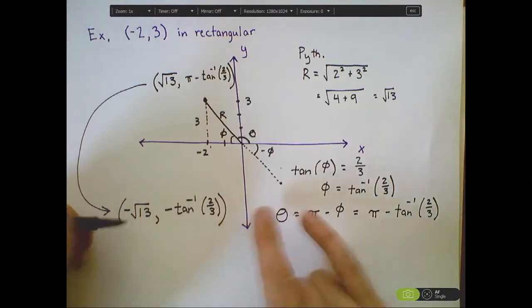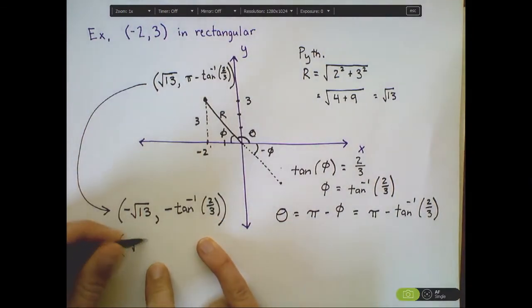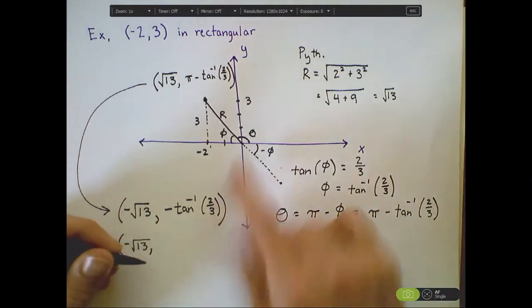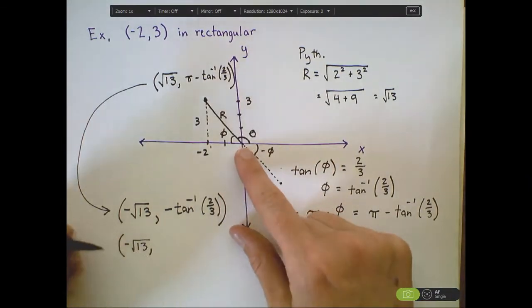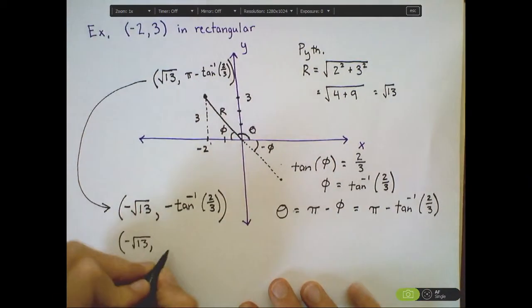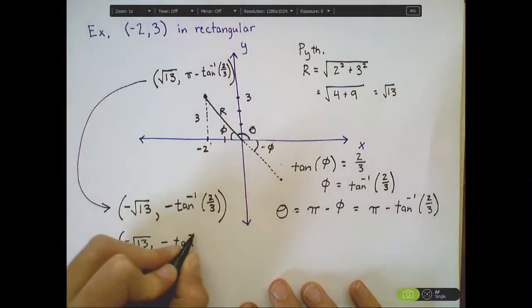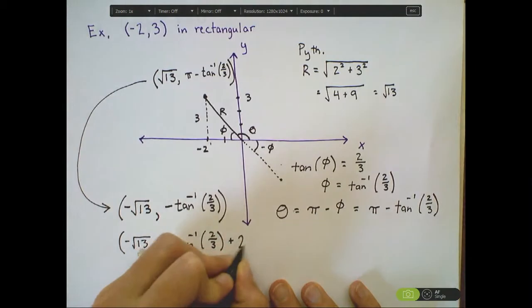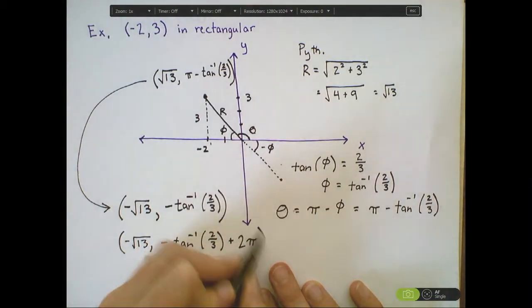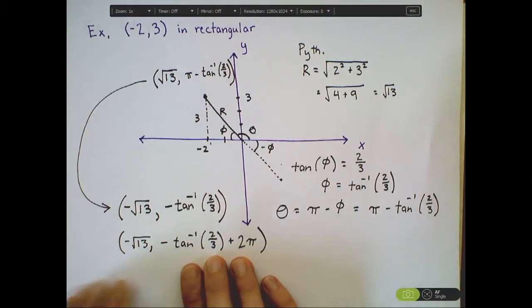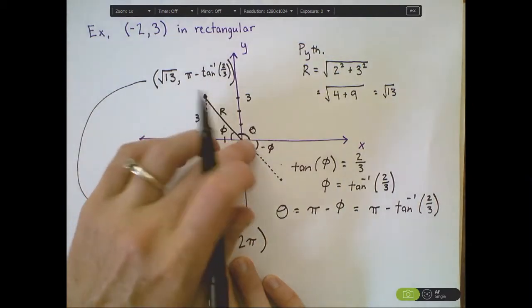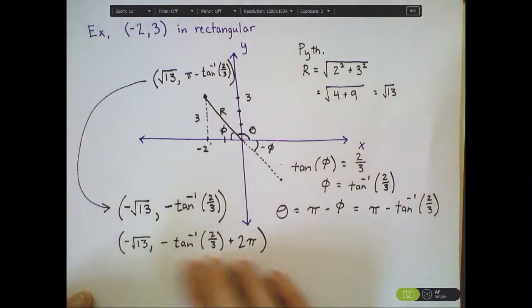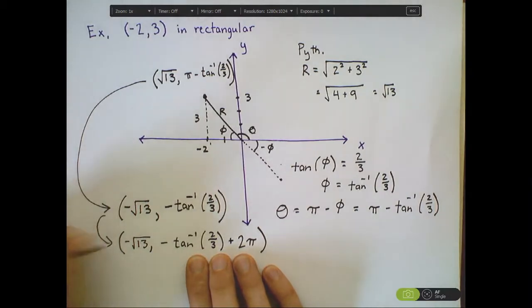Similarly, I could take this exact same coordinate, -√13, as my distance, traveling backwards √13, and I could take this angle measure and add 2π to it, because 2π just means going around in a full circle. Again, this angle measure is different. I've gone 2π's worth around the circle to get to this, but they would all measure the same point.